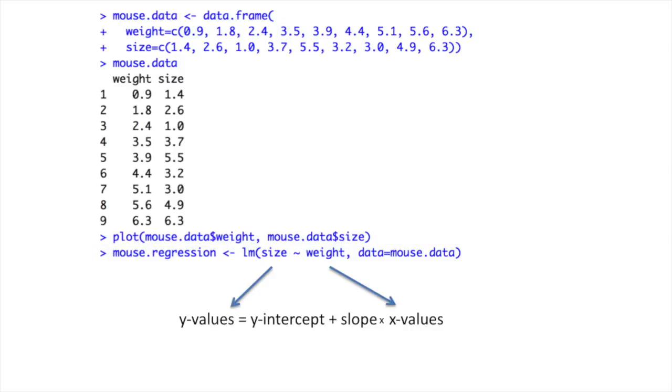The way I've specified the formula means that size are considered to be the y values and weight are considered to be the x values. The Linear Models function then calculates the least squares estimates for the y-intercept and the slope.